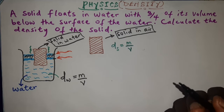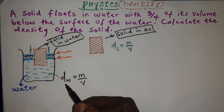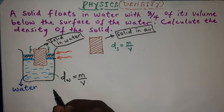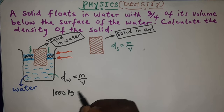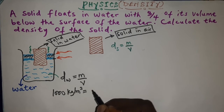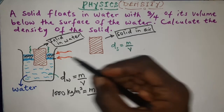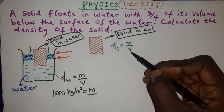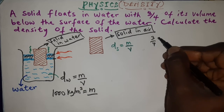There's no need to stress ourselves — we already know the density of water is 1000 kg/m³. So I write: 1000 kg/m³ equals the displaced mass we don't know, divided by the volume in the water, which is 3/4 of the overall volume V.